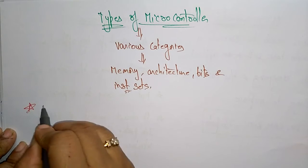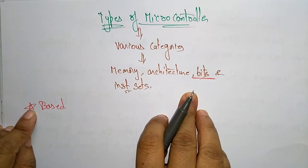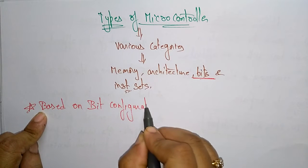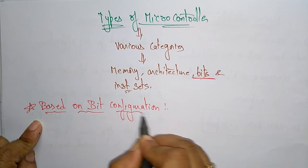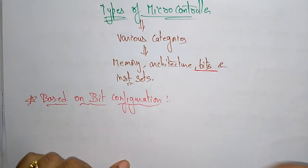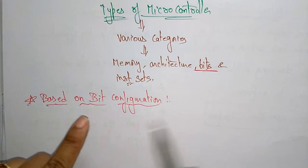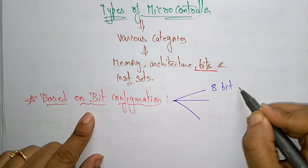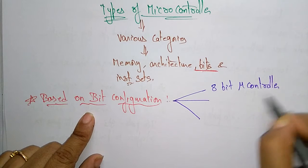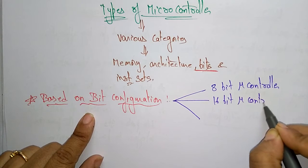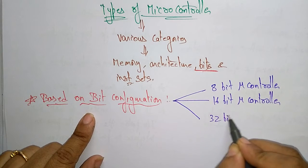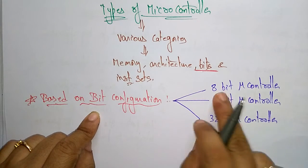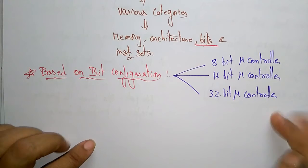Based on bit configuration, a microcontroller is divided into three categories: one is an 8-bit microcontroller, another is a 16-bit microcontroller, and the third is a 32-bit microcontroller.